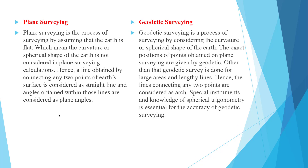In geodetic surveying, geodetic is a process of surveying by considering the curvature or spherical shape of the earth. The exact position of points obtained in plane surveying are given by geodetic surveying. Geodetic survey is done for large areas and lengthy lines; hence, the lines connecting any two points are considered as arcs. Special instruments and knowledge of spherical trigonometry are essential for the accuracy of geodetic surveying.